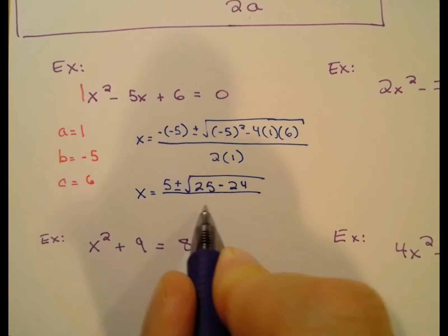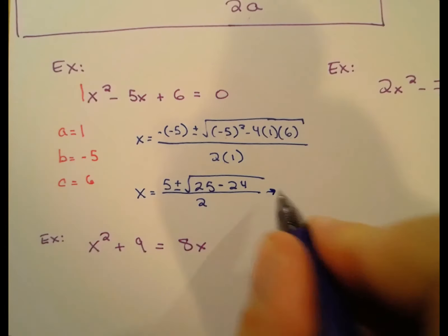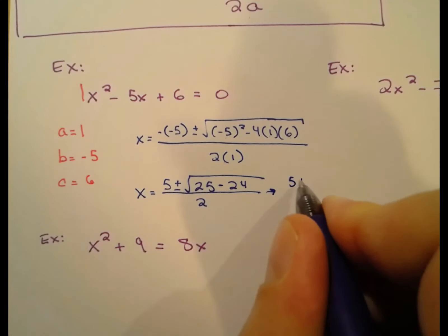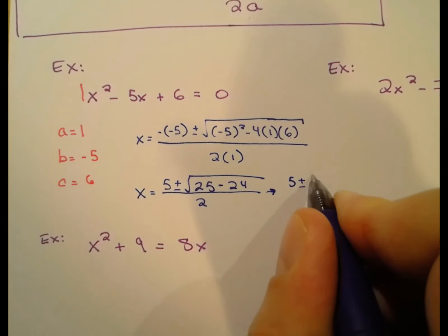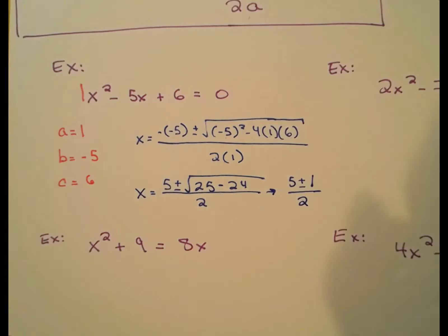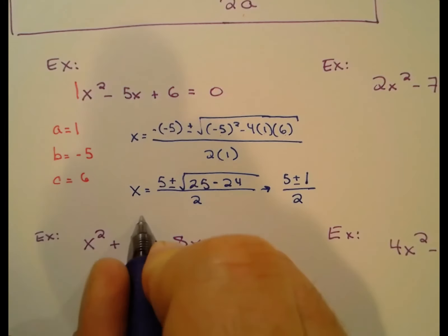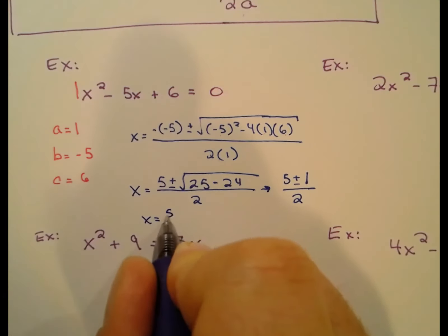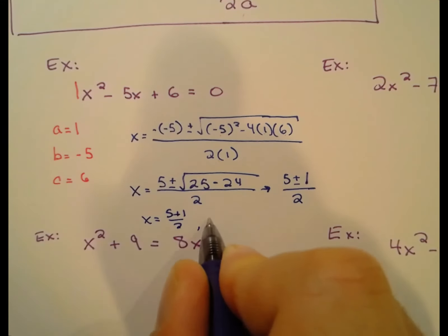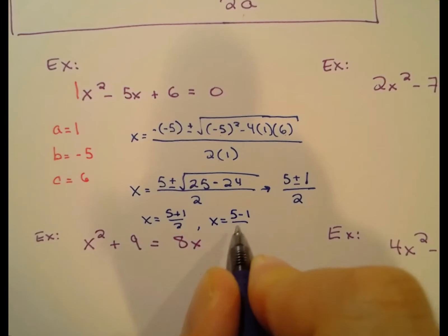I started with an easy example: 25 minus 24 is just one. So we have five plus or minus the square root of one, all over two. This breaks into two equations: x equals five plus one over two, and x equals five minus one over two, because of the plus or minus.